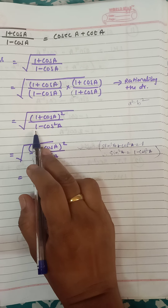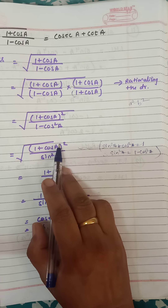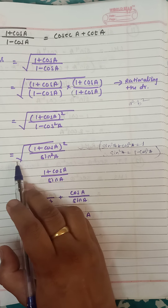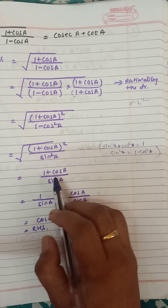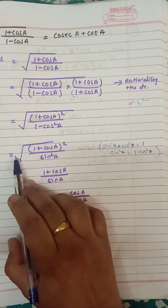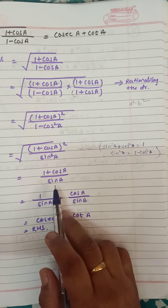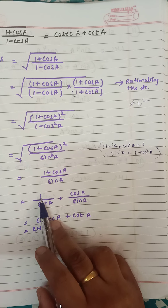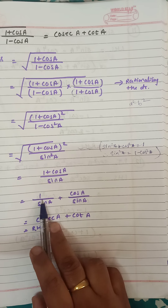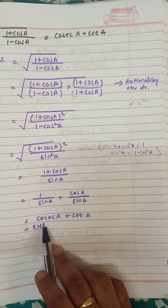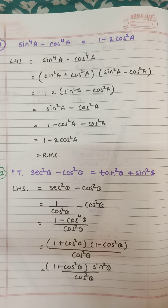For 1 minus cos²a we write sin²a. Now this is also a square and the square root, so they cancel. We get (1 plus cos a) upon sin a. Separating the denominator: 1 upon sin a plus cos a upon sin a — this is cosec a and this is cot a — which equals the right hand side.